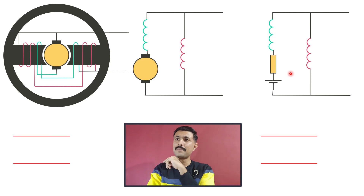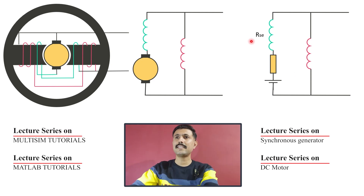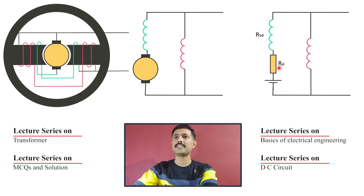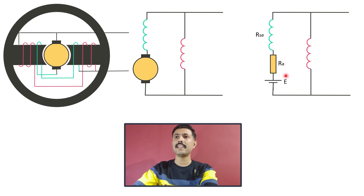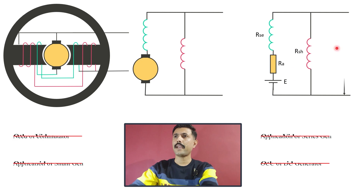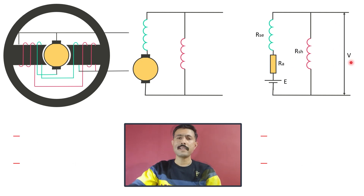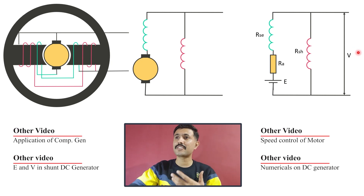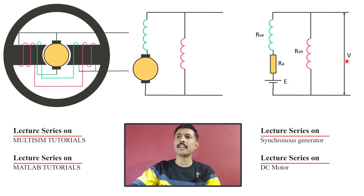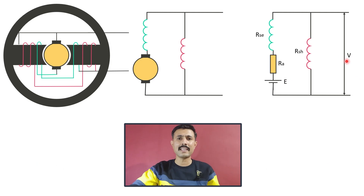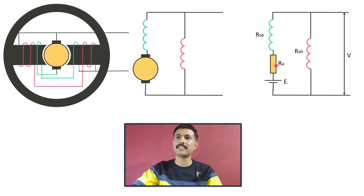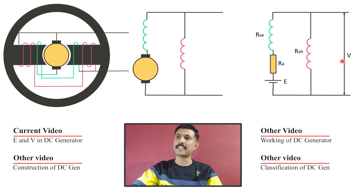Now we will identify the different electrical parameters in this circuit. RSE is the series field winding resistance. RA is the resistance of the armature winding. E is the induced EMF. RSH is the shunt field winding resistance, and V is the terminal voltage across the output terminals. Our aim is to establish the relation between terminal voltage V and induced EMF E. We can measure terminal voltage using a multimeter or voltmeter.